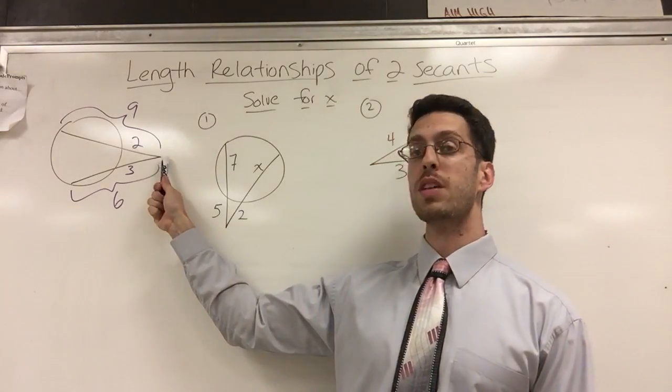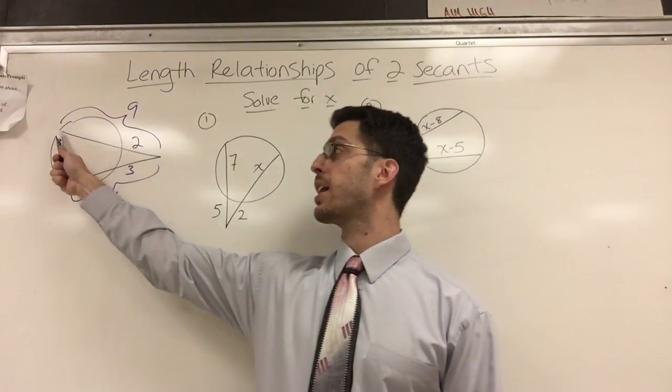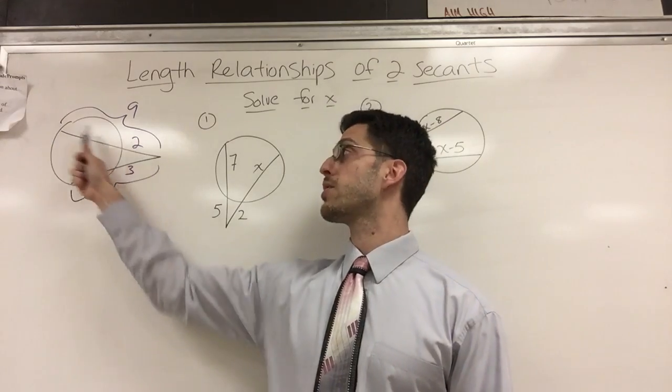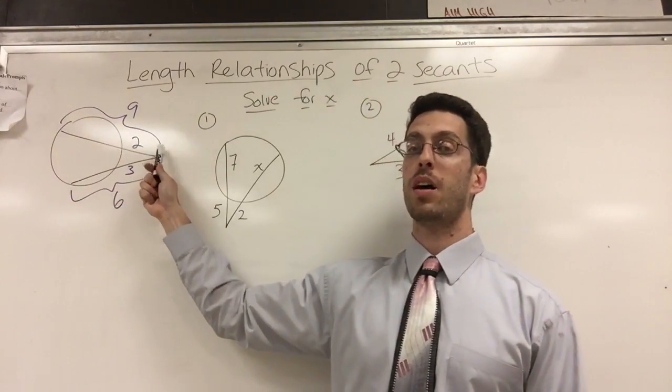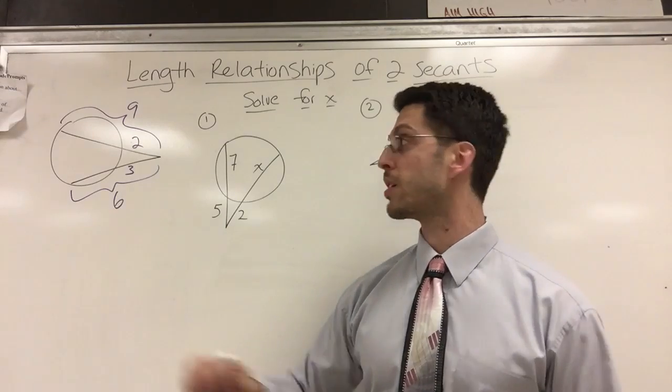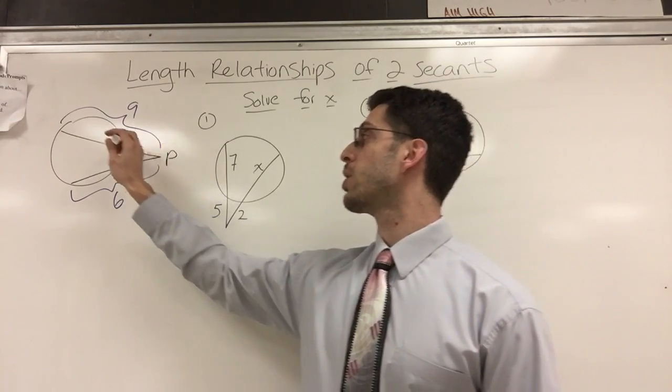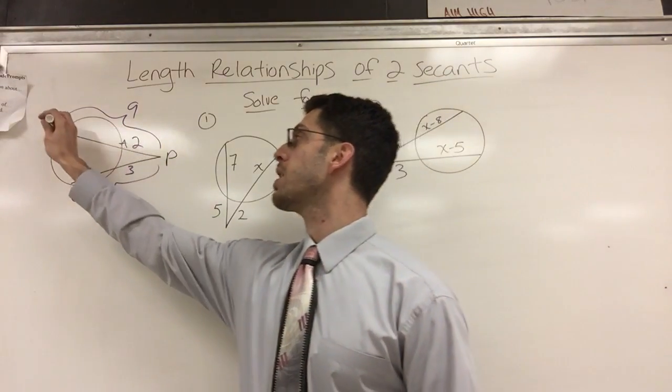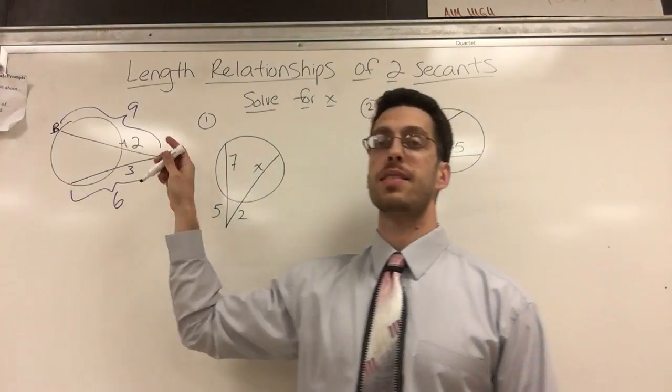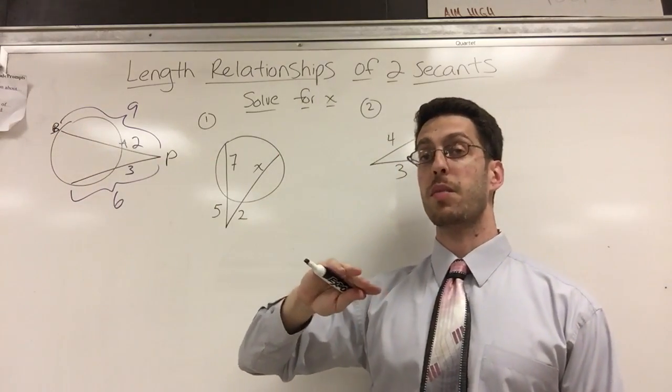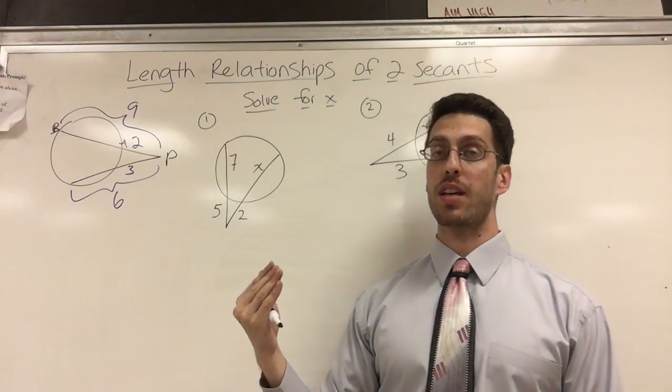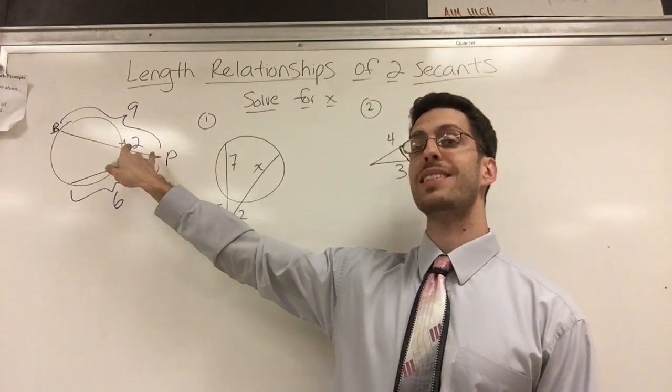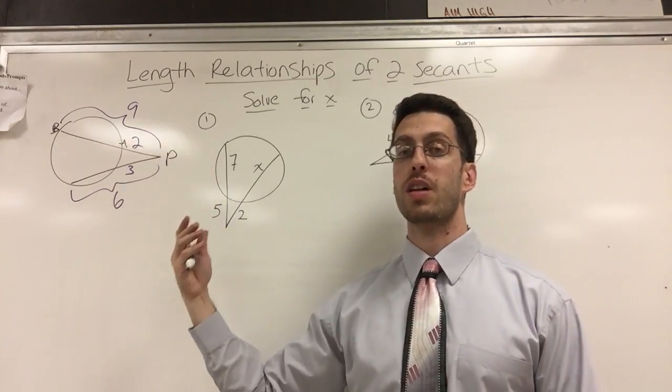So from this point outside, hits the circle once and hits it again. That's twice. So this is considered a secant segment and I would call this segment the entire secant segment. So from P to A to B, PAB is the entire secant segment. PA alone is the exterior secant segment. It's the part of the secant that's outside the circle. Exterior is outside.